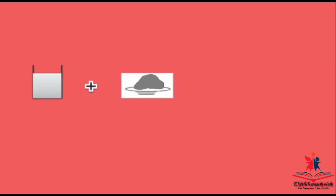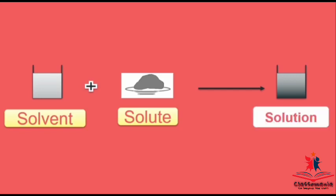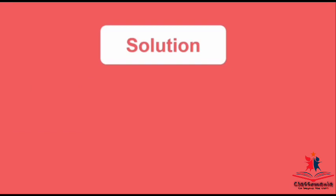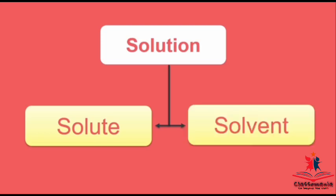अगर हमने one component लिया और दूसरा component add कर दिया, तो solution form होगा. The component which is more in quantity is the solvent, and the component which is less will be the solute. Solvent and solute मिलकर solution बनाते हैं. So solution के दो components हैं — solute and solvent.